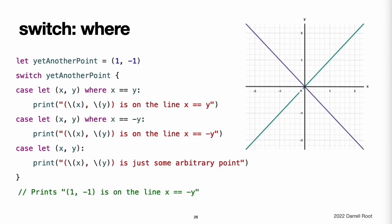A switch case can use a where clause to check for additional conditions. This example categorizes an (x, y) point on a graph. The switch statement determines whether the point is on the green diagonal line where x == y, or the purple diagonal line where x == -y, or neither. The three switch cases declare placeholder constants x and y, which are used as part of a where clause to create a dynamic filter. The switch case matches the current value of point only if the where clause's condition evaluates to true. The final case matches all possible remaining values, so a default case is not needed.